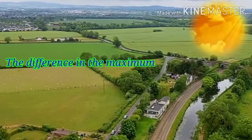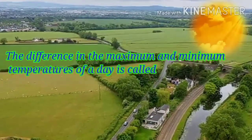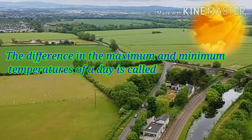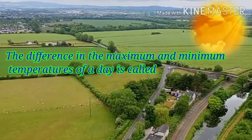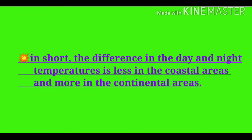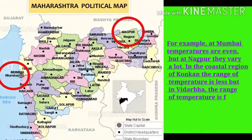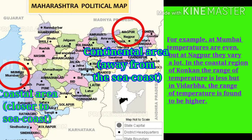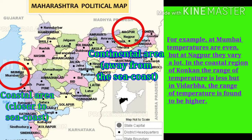This leads to sharp differences in the day and night temperatures. The difference in the maximum and minimum temperatures of a day is called diurnal range of temperature. In short, the difference in the day and night temperatures is less in the coastal areas and more in the continental areas.